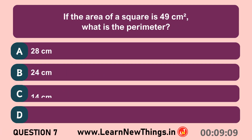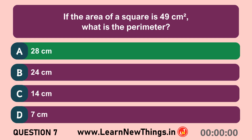If the area of a square is 49 cm², what is the perimeter? 28 cm.